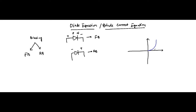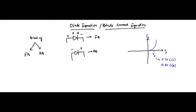We have discussed the volt-ampere characteristics for a p-n junction diode in forward biased and reverse biased modes. For forward bias, the cut-in voltage — also called the built-in potential — is around 0.7 volts for silicon and 0.3 volts for germanium.